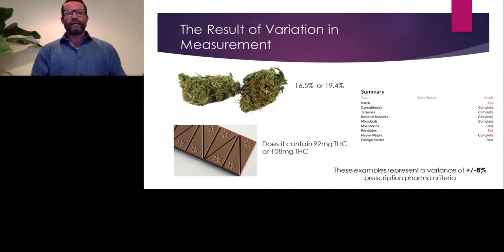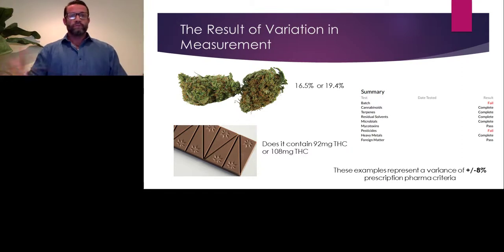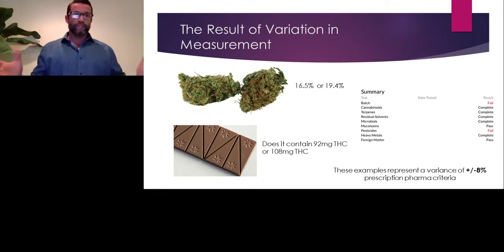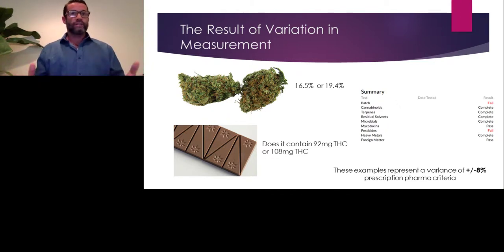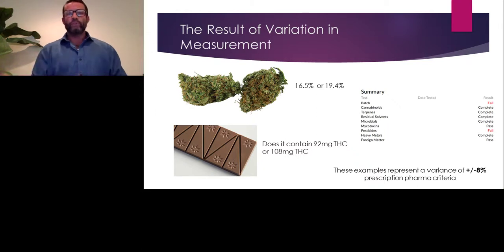When we have variation in measurement results, what does that mean? For example, with the same cannabis flower sample, one lab could return 16.5% while another says 19.4%. With an infused chocolate targeting 100 milligrams, one lab could say 92 and another could say 108. That represents a plus or minus error of 8%, with an overall swing of 16%. If the true value of that cannabis flower was 18%, one lab could measure 16.5% and another time it could come back at 19.4%.